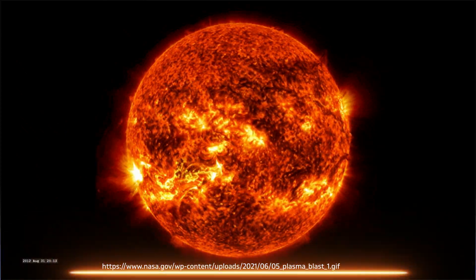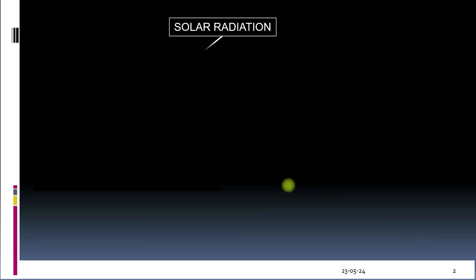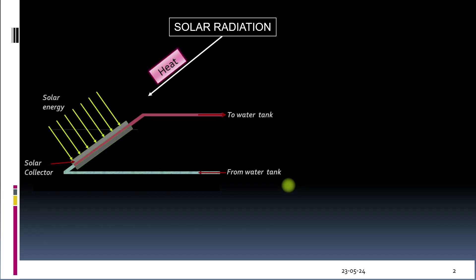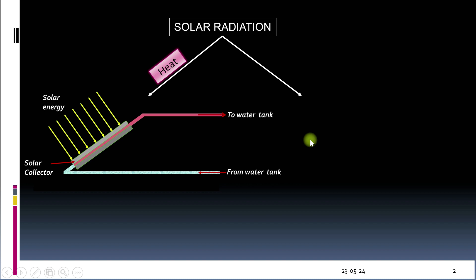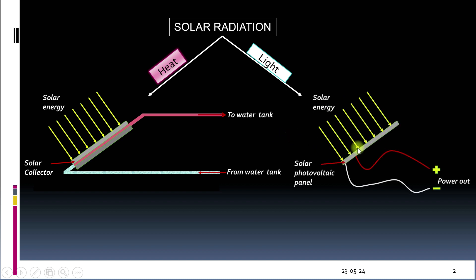Solar radiation can be used to generate thermal energy with the help of a solar thermal collector. This thermal energy can then be used to heat fluids — that is, gas or liquid. In this conceptual diagram of a solar water heater, cold water enters the solar thermal collector from the lower side, gets heated in the collector, and hot water leaves from the top side.